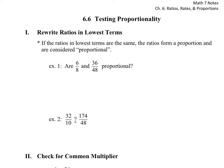Section six covers testing proportionality — determining whether two ratios are equal. There are three different ways to do this. The first method is rewriting fractions in lowest terms. If the ratios in lowest terms are the same, the ratios form a proportion and are considered proportional. A proportion is simply one fraction that equals another fraction.